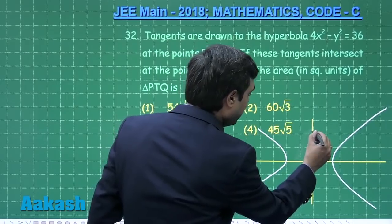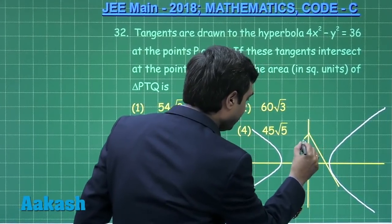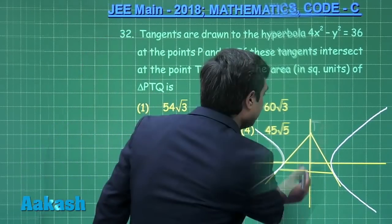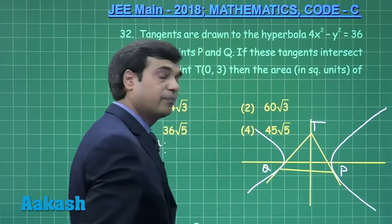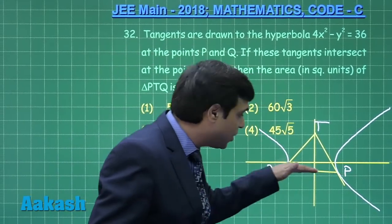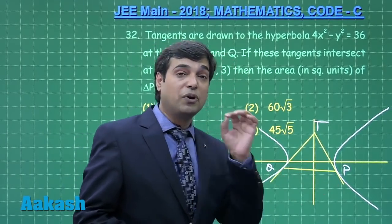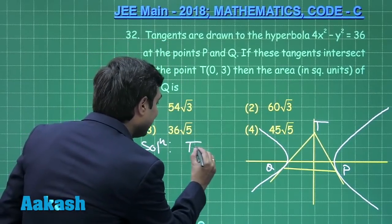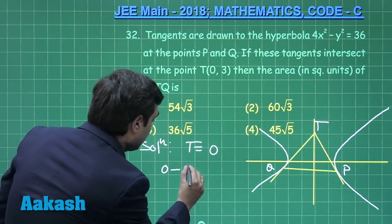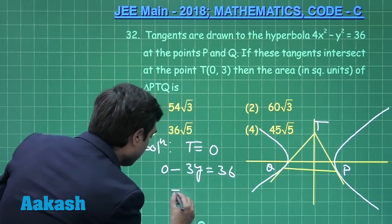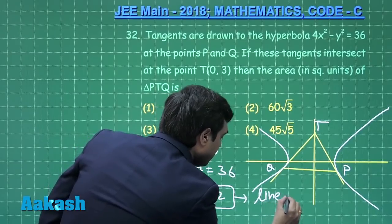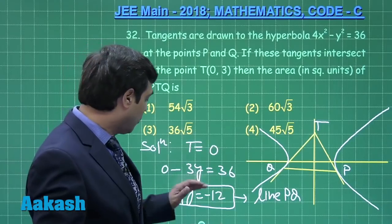Let us consider point T; the two tangents are drawn from T touching the hyperbola at P and Q, which are then joined. We need to find the area of triangle TPQ. First, we find the equation of line PQ using T = 0: substituting gives 0 − 3y = 36, so y = −12. This is the equation of line PQ.